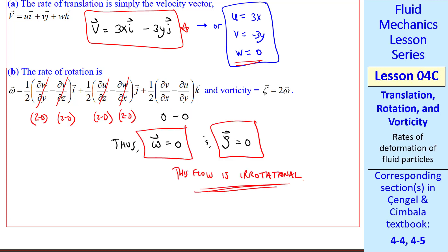Unlike the first example, this flow is irrotational. As a fluid particle translates in the flow, it does not rotate.